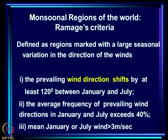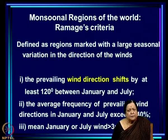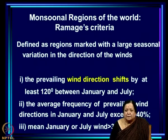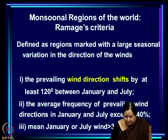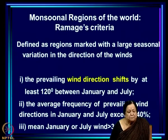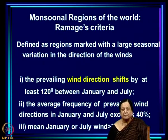There is one more condition Ramage put in, not implicit in earlier definitions: the mean January or July wind has to be greater than 3 meters per second. This strikes me as being slightly arbitrary, although it is true that the wind has to have a certain magnitude before we can talk of changing wind direction. Whether it should be 3, 2, or 1 meter per second is really a subjective decision.